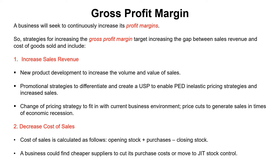Look at your STEEPLE analysis — the global environment has been influenced by the war in Ukraine and the impact on energy costs. Supply chain issues from the pandemic haven't totally cleared. All this has influenced inflation, which has a knock-on effect on consumer spending. If you're a business looking to boost sales revenue, consider pricing changes and value product ranges — but cutting prices could impact brand perception.